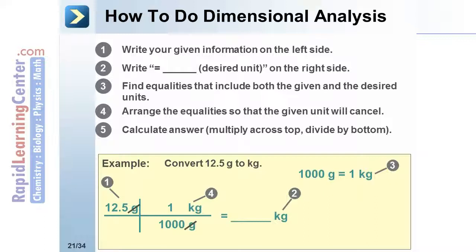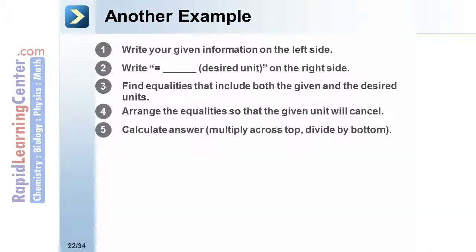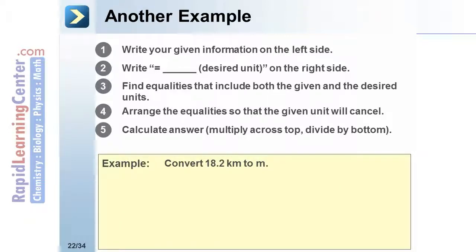Finally, multiply across the top and divide by numbers on the bottom. 12.5 times 1 divided by 1000 equals 0.0125 kilograms. Here is another example: to convert 18.2 kilometers to meters.